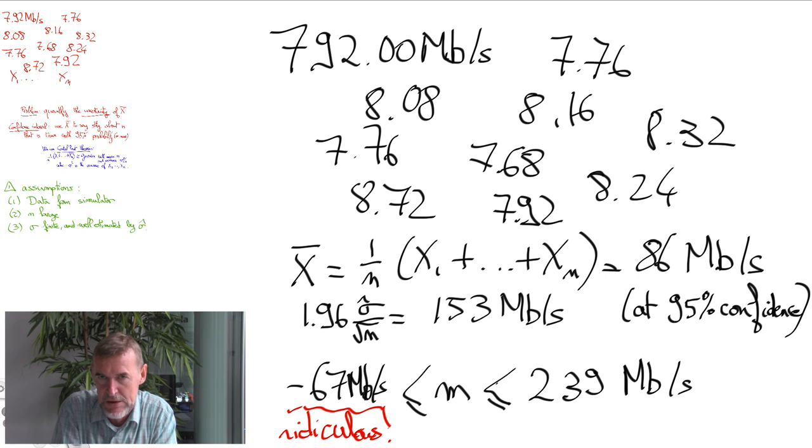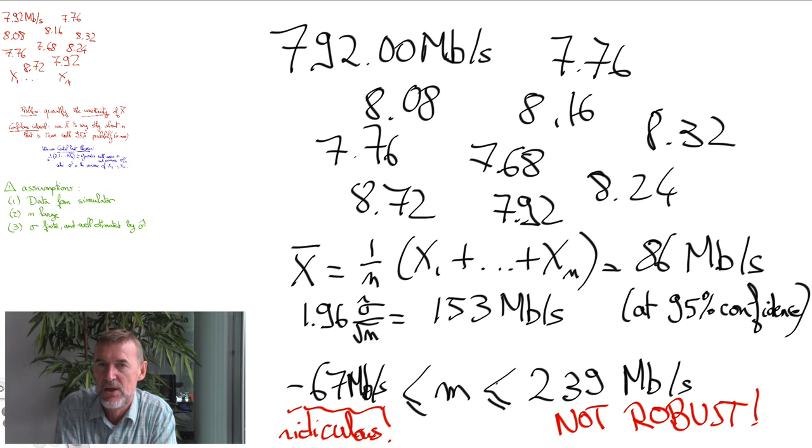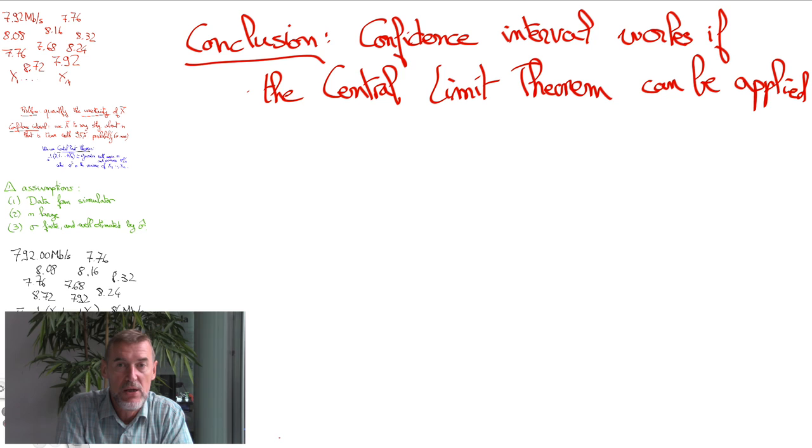Of course, this is ridiculous. The value must be positive. The interval is, of course, much larger than is physically possible. But this is illustrating one of the potential problems of the confidence interval for the mean. It is that it is not robust. Here, it is not robust to one outlier. In other words, the formula for the confidence interval for the mean works only if we can be reasonably sure that the central limit theorem works, in particular, if the assumption of the variance being not infinite holds.